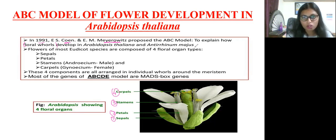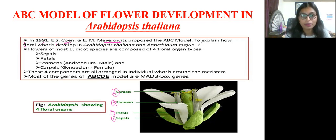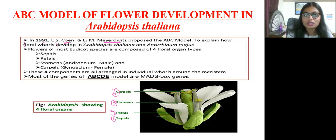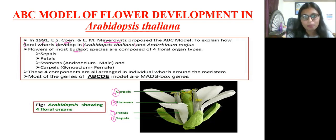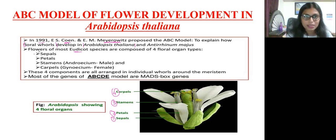In this ABC model of flower development, they explain how these four floral whorls develop. The experiment uses Arabidopsis thaliana, which is a eudicot species. Eudicot means the flowering plant species are composed of four floral organ types: sepals, petals, stamens, and carpels.